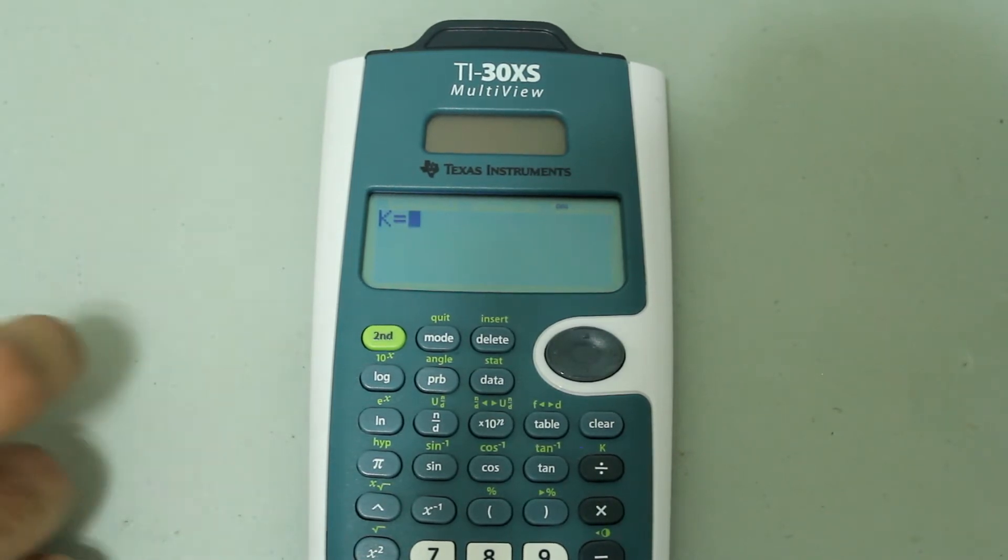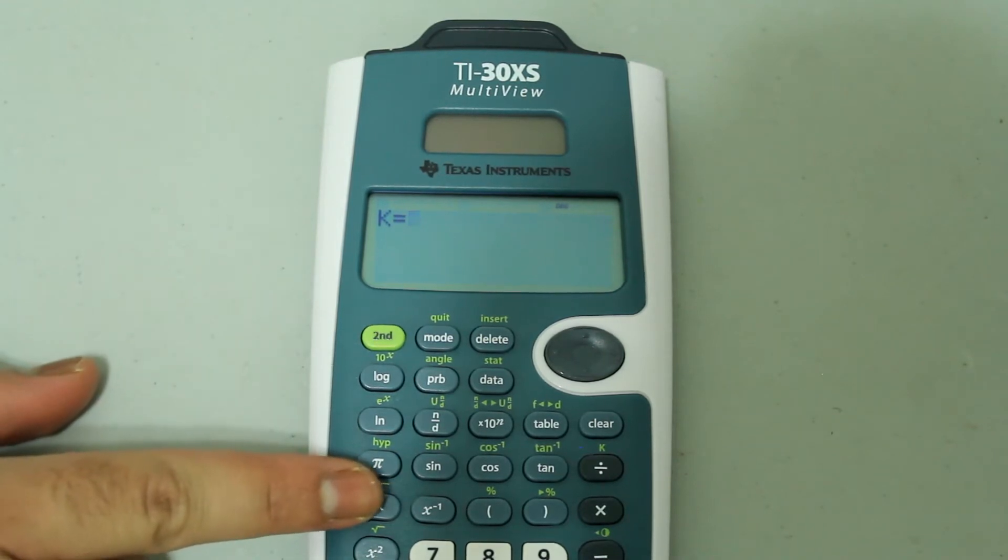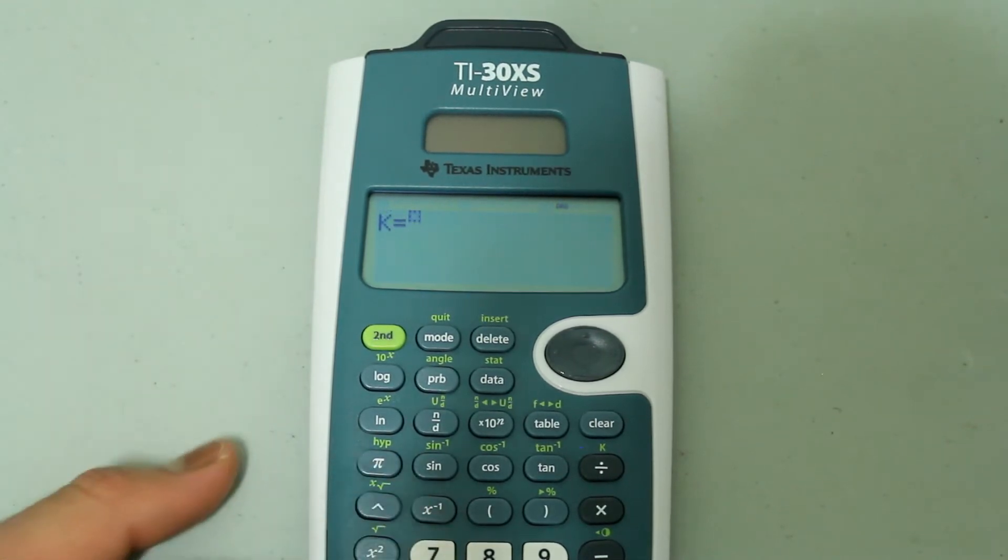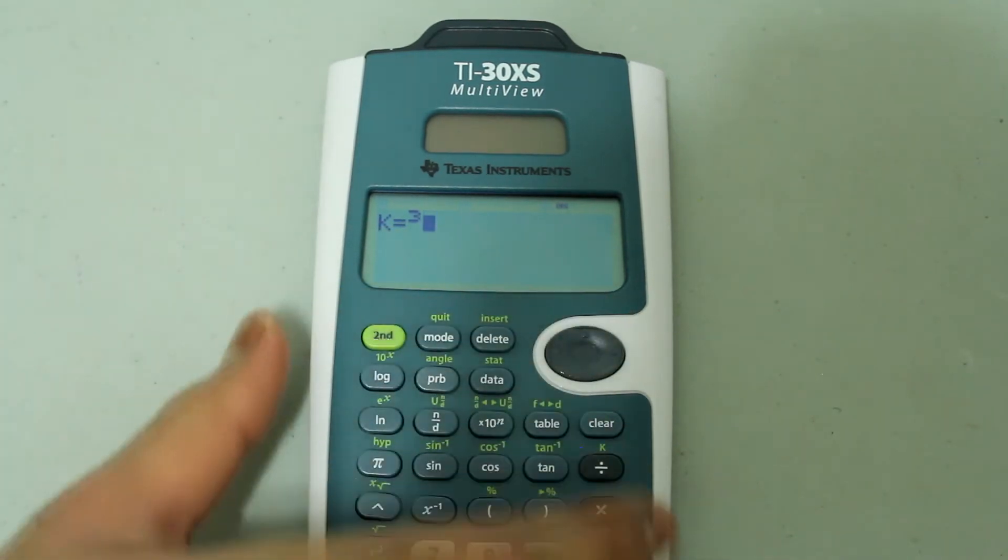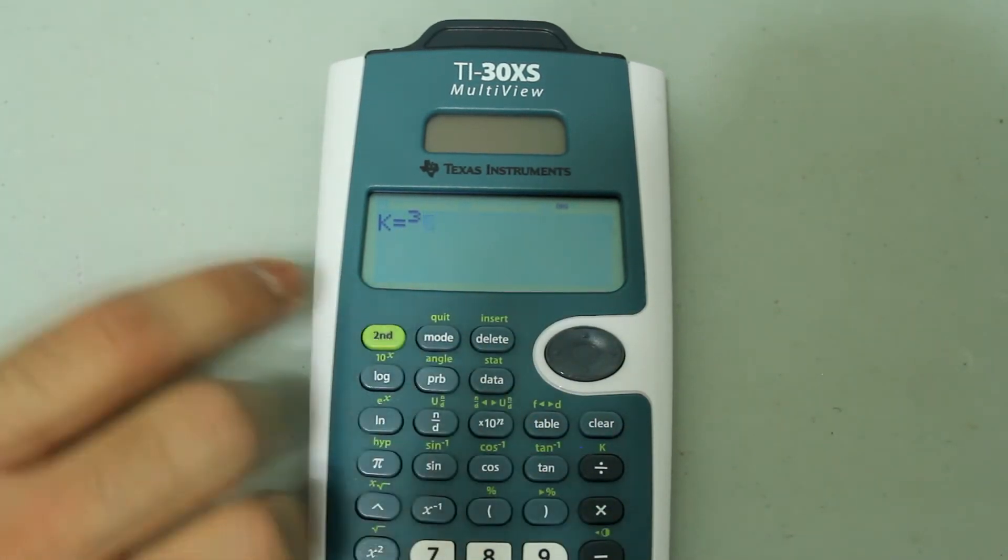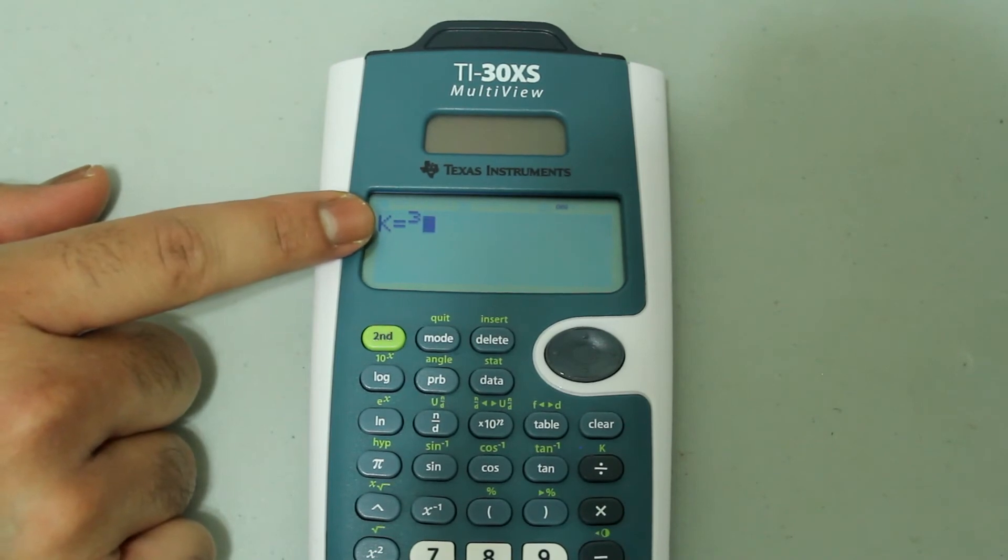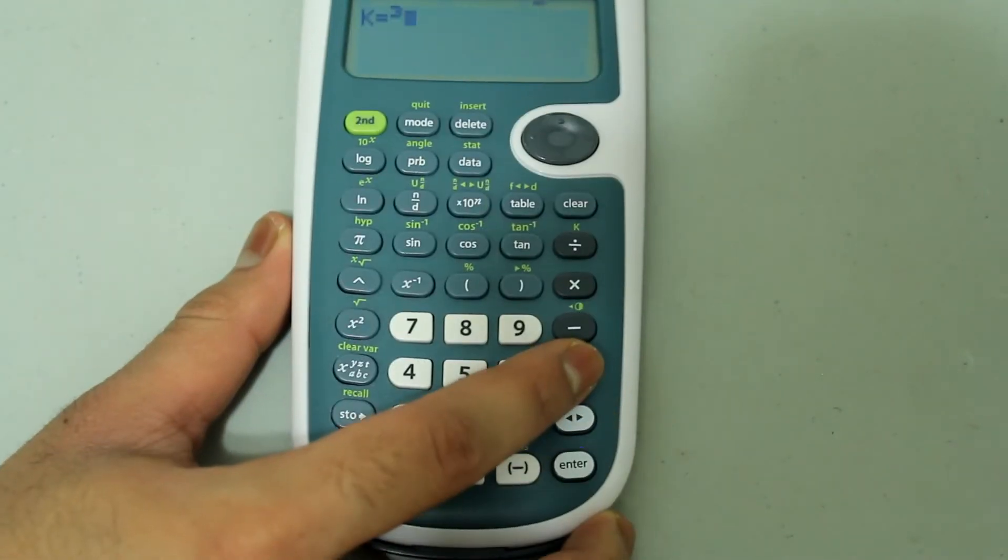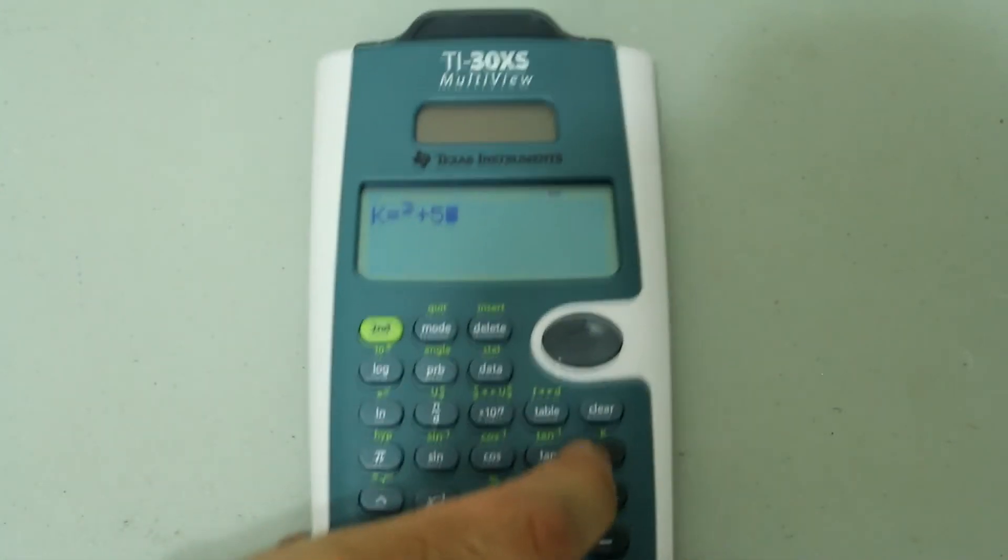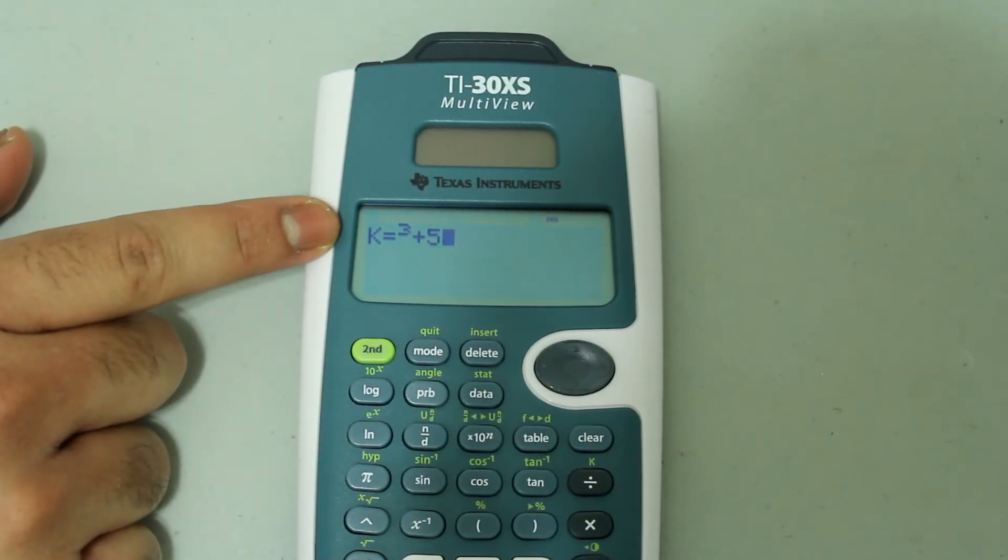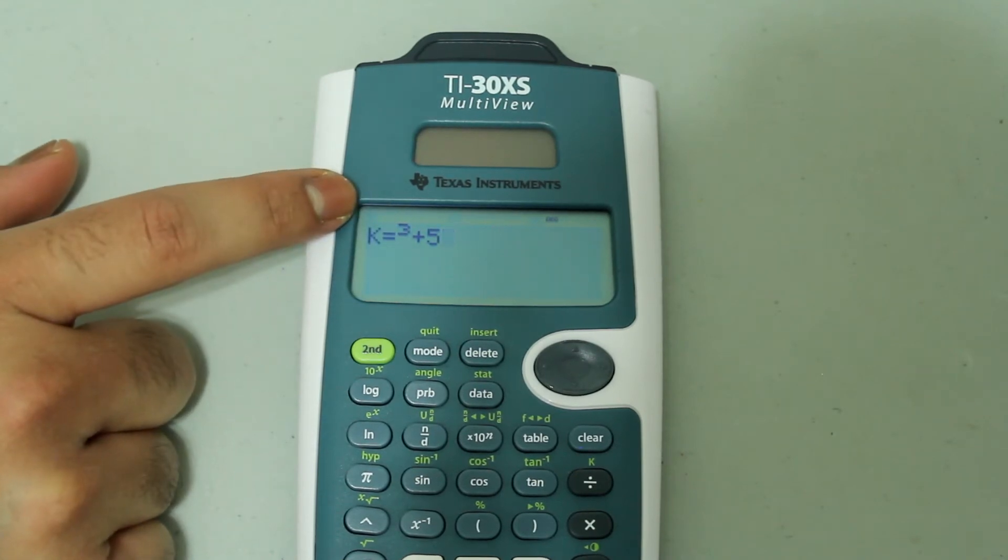So for example, if I want the entry to be cubed, all I'm going to do is type in the caret key and then cube and then arrow right. So now the entry is going to be cubed and then I'm going to add 5. So that's just whatever the entry is going to be cubed and then 5 is going to be added to it.